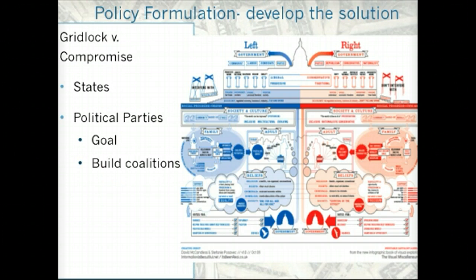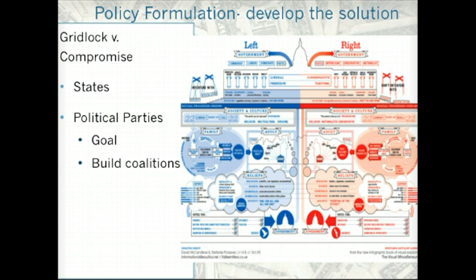Recent election trends show that there's going to be divided government. Split-ticket voting increases divided government, and there's going to be gridlock because of political parties. The goal of a political party is to win elections — they have to win elections in order to control the formulation of policy and maintain majorities in the legislative branch or control of the executive branch. So they're going to have different ideas of what's best for developing a solution. Political parties have to build coalitions by promising to solve your problems and convincing the people that they have the best solution.